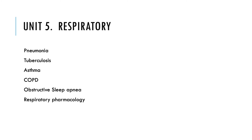Unit 5: respiratory. We've got pneumonia, TB, asthma, COPD, obstructive sleep apnea, and a little respiratory pharmacology — mostly around inhalers. What do we use for asthma and COPD? We also need to know those antibiotics and anti-tubercular drugs used for tuberculosis. There are two drugs with different actions; if you combine them, it drastically reduces the length of time the patient has to be on anti-tuberculars — usually six months, but that can be reduced. What is pneumonia? How is it different if it's viral or bacterial? How do we treat it?